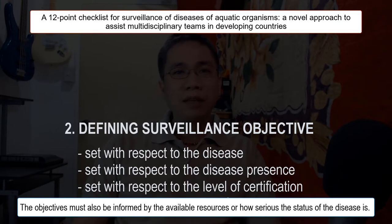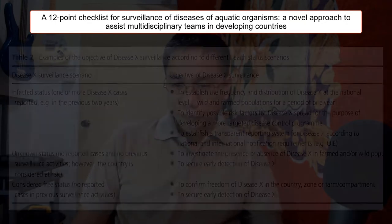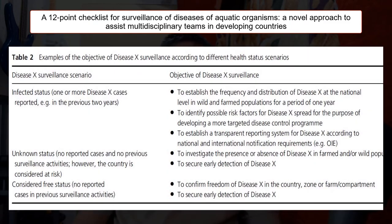In step two, we need to define our surveillance objective. Should we focus more on understanding the disease — classifying it as endemic, exotic, or emerging? Is it practical to limit the surveillance to disease presence only, based on known certification standards, to save time, money, and effort? The reality in some developing countries is that surveillance is totally impossible due to various limitations in manpower, time, and resources. Examples of surveillance objectives include, for infected status: to establish the frequency and distribution of disease X at the national level in wild and farm populations, and to identify possible risk factors for disease X.